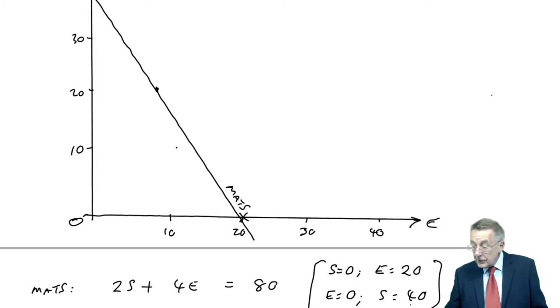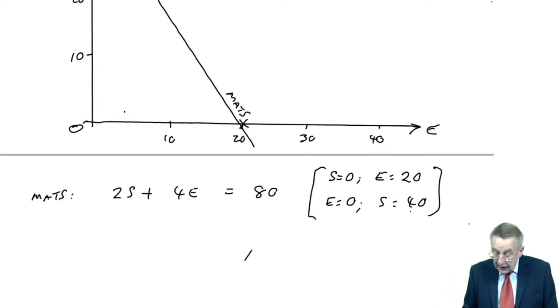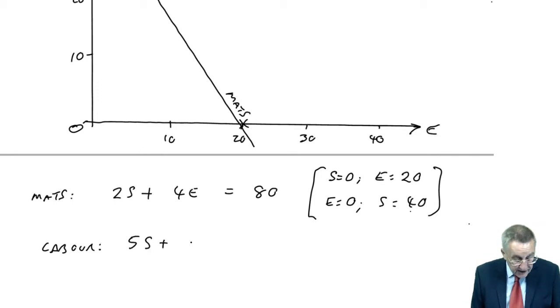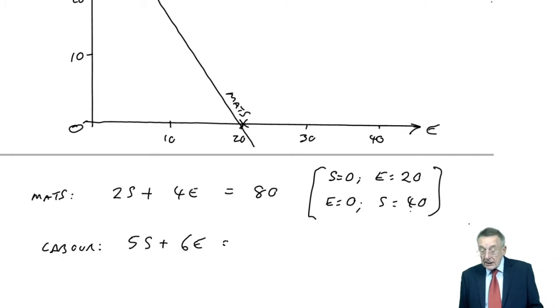So whatever answer I end up with, S and E have to be on or below that line there. And we do the same for all the constraints. So there was the labour constraint, which was what? 5S plus 6E.